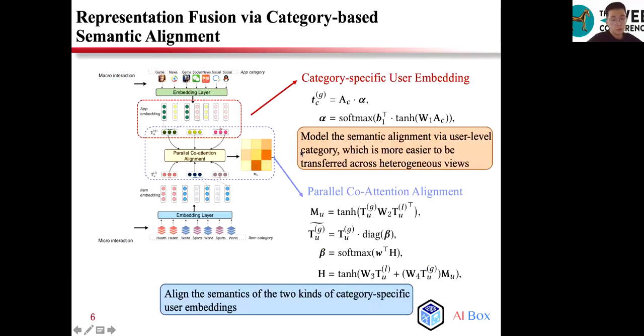Second, in order to fuse the two kinds of representations, we propose to model user-specific semantic alignment between app categories and item categories for representation fusion. We propose to model the semantic alignment by category, which is easier to be transferred across heterogeneous views. Our idea is to construct the user-level category alignment across two views. We learn the user-specific category embedding using the self-attention methods.